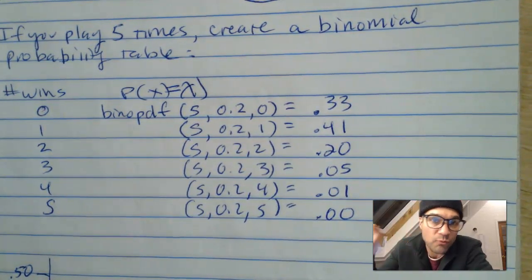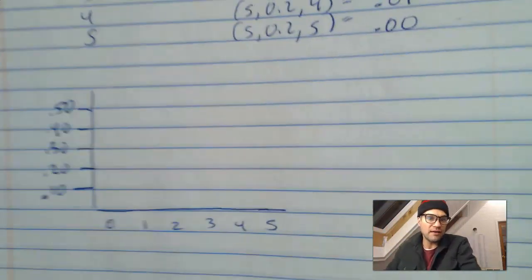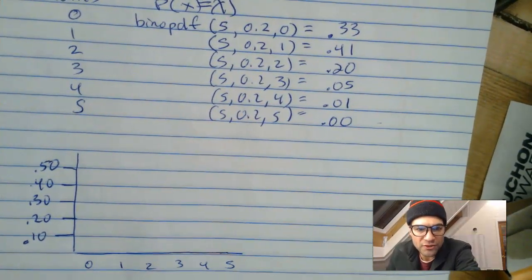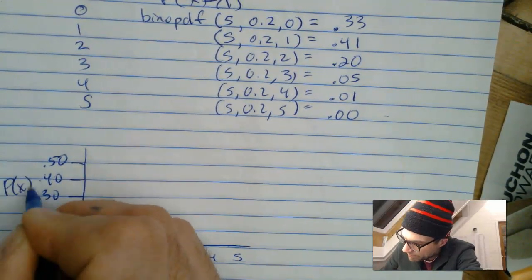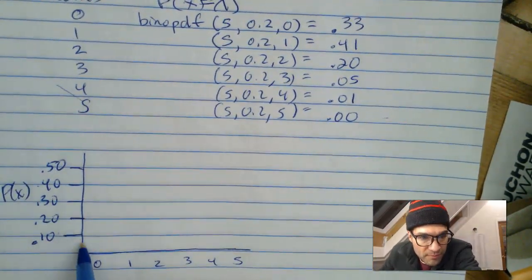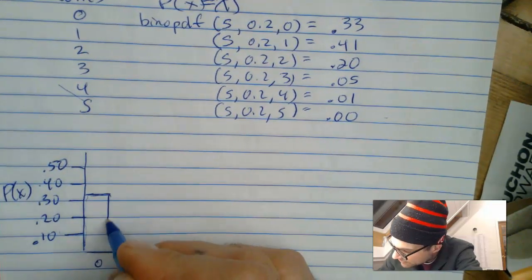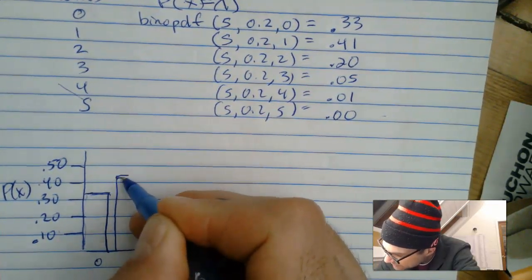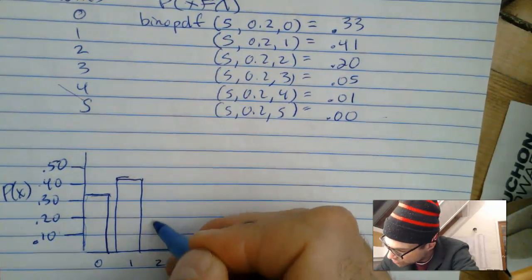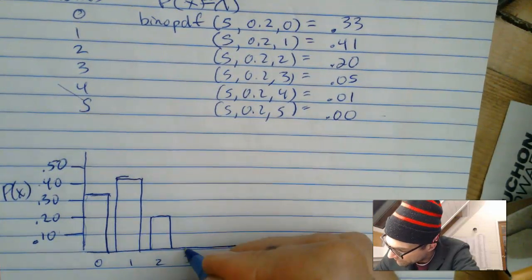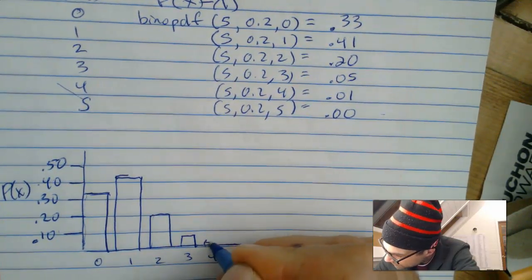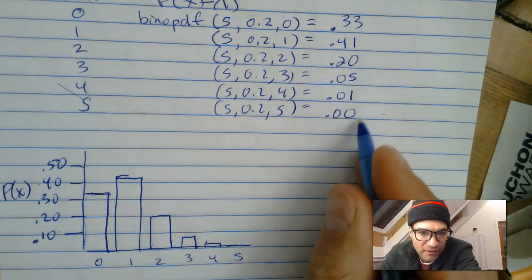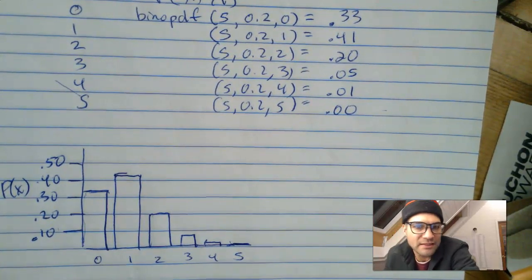You can draw a picture of this distribution. On the probability axis: winning zero would be 33% of the time, winning exactly once about 41% of the time, winning exactly twice about 20%, winning exactly three times about 5%, four times about 1%, and five times just a little bit. So there's the probability distribution.